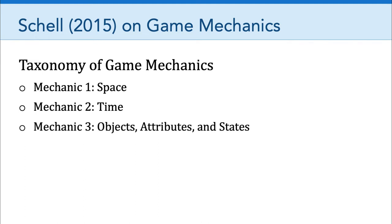The third mechanic in the taxonomy is objects, attributes, and states. The space of games is filled with objects — characters, props, tokens, scoreboards. Shell likes to think of these objects as the nouns of game mechanics. These nouns or objects have one or more attributes; one of those attributes is position in the game space. For example, in the Lemonade Stand game, lemons have a certain value and a certain quantity, and they may be good lemons or rotten lemons — those are different states those objects might have, which often influences their value in the game world.